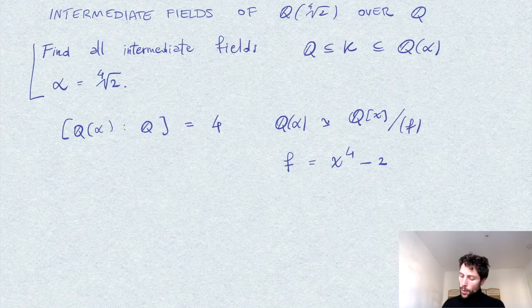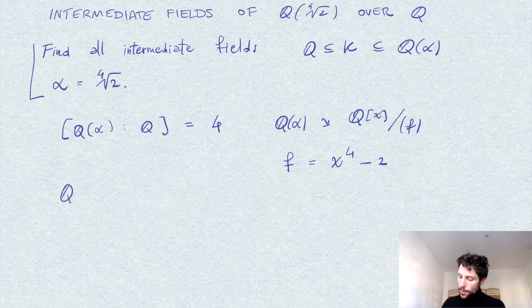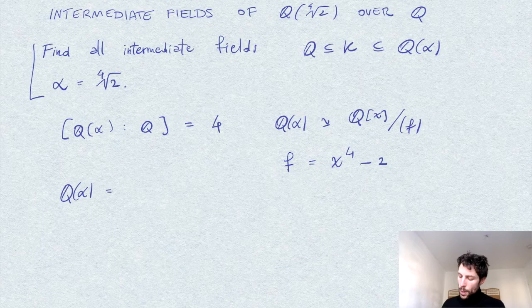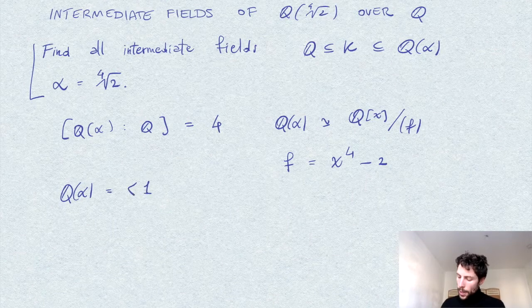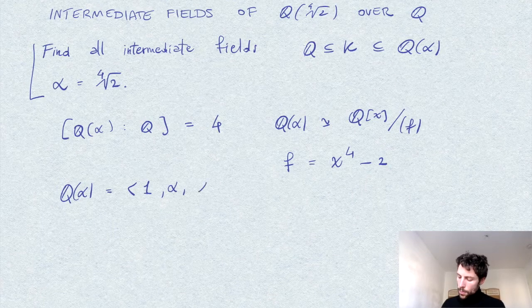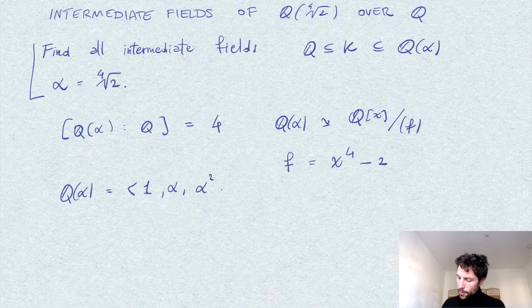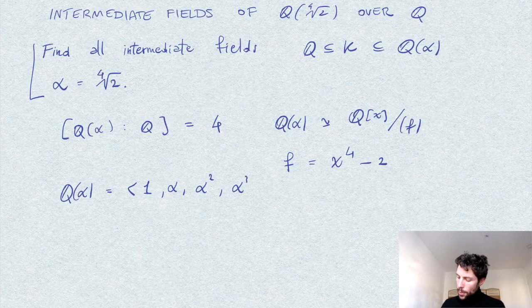We can write our basis of Q(α) as a vector space, spanned by the powers of α up to power 3: {1, α, α², α³}.